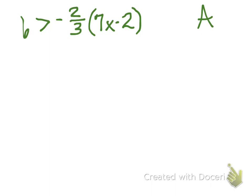But what I look at on this problem is right off the bat I can see that negative two-thirds is being multiplied by the entire 7X minus 2. So my gut instinct, I guess, would be to distribute.